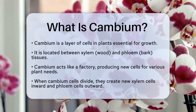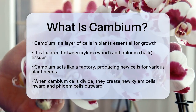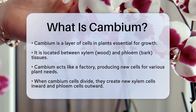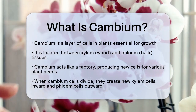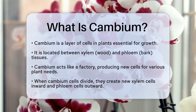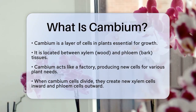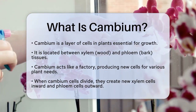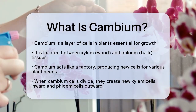Cambium is a special layer of cells in plants that plays a crucial role in their growth. It's found in the area between two other types of plant tissues: the xylem, which is like the plant's wood, and the phloem, which is similar to the plant's bark.